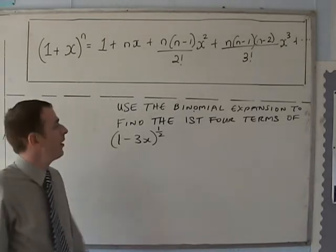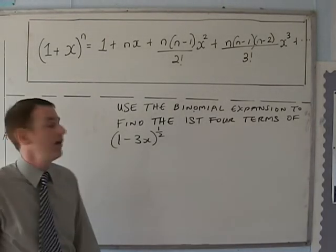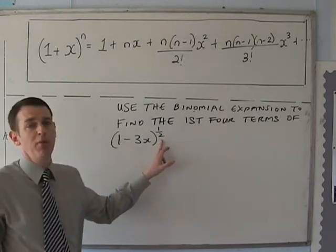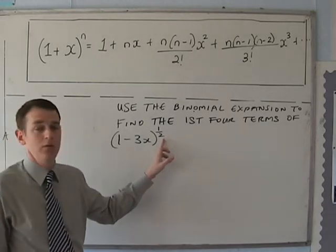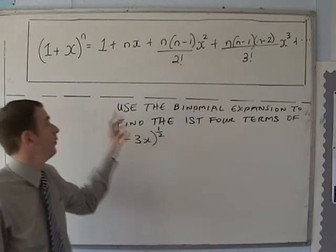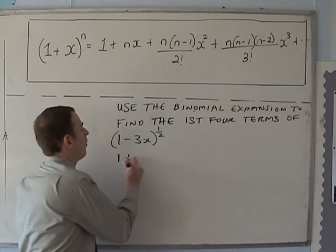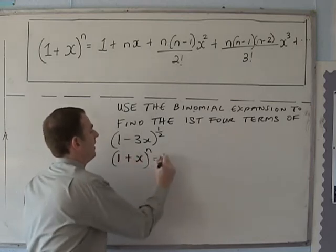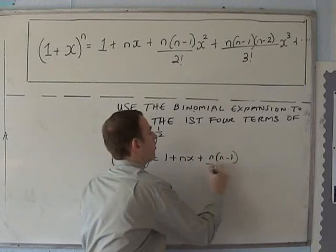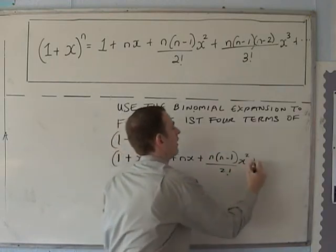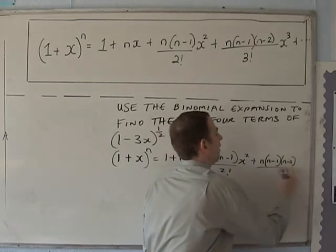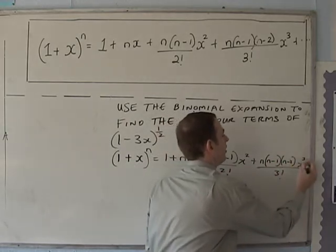Use the binomial expansion to find the first four terms of (1-3x)^(1/2). Now instead of a positive or negative integer power we've got a fractional power. Everything still works exactly the same — we start off by writing it all out: (1+x)^n equals 1 plus nx plus n(n-1)/2! times x squared, plus n(n-1)(n-2)/3! times x cubed.